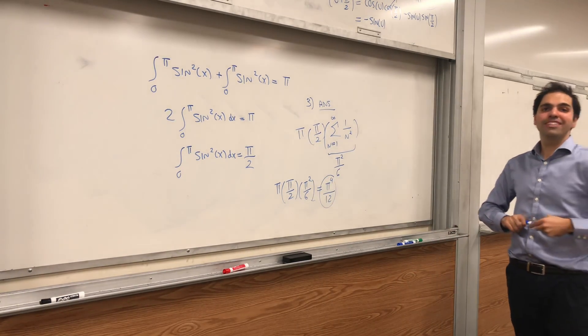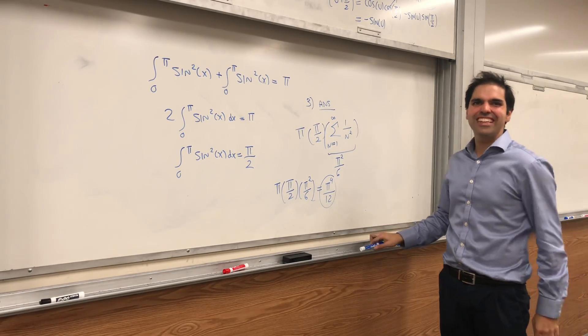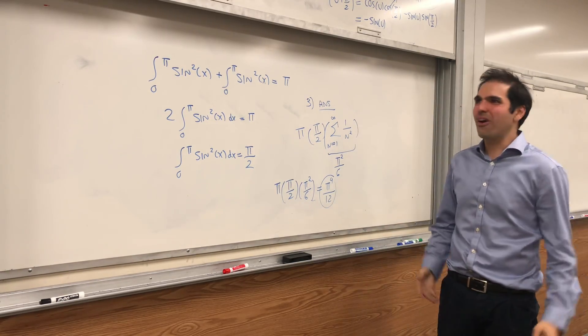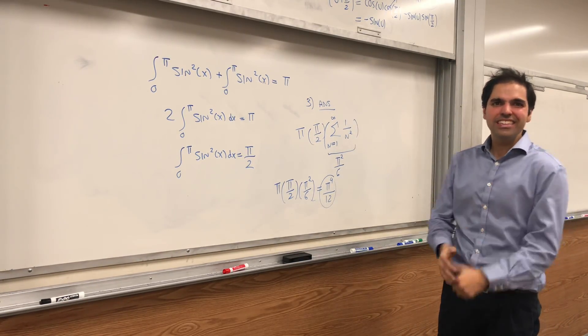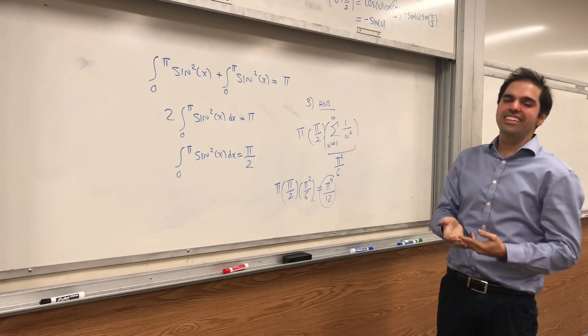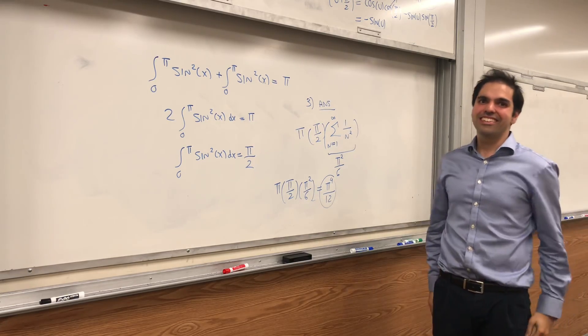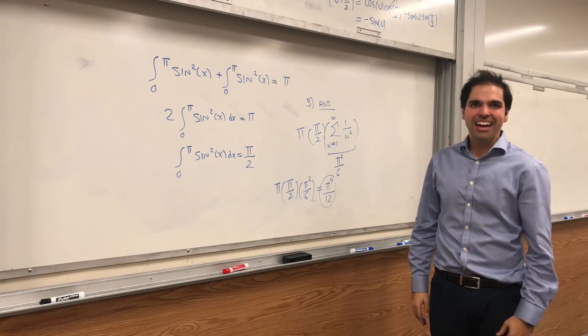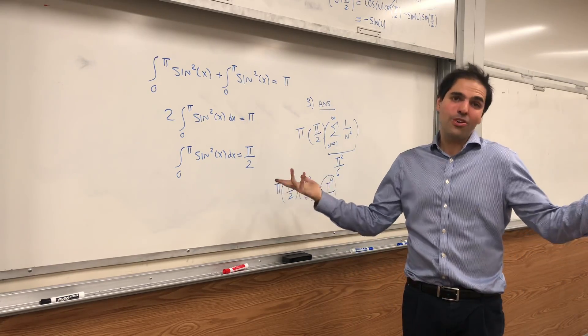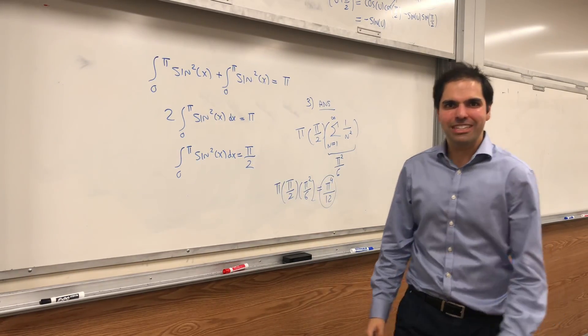Therefore, the volume of this bead is pi to the 4th over 12. How cool is that? And again, this is really the ultimate calculus 2 problem because we use integrals, we use volumes, we use u-sub, we use trig integrals, and we even use some series there. So this is seriously awesome. I hope you like this calculus extravaganza. If you want to learn more math, please make sure to subscribe to my channel. Thank you very much.